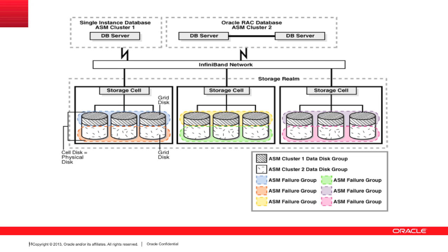Just out of interest, how many people have either got an Exadata or seen one? For you as Solaris people, you won't see these — you have no access to the storage cells from the compute nodes. In terms of Supercluster, the T5-8s are the compute nodes, which are the database or application machines. The Exadata accesses the storage cells via InfiniBand using the RDS protocol, down through ASM — Oracle's Automatic Storage Manager — down into the storage cell software.